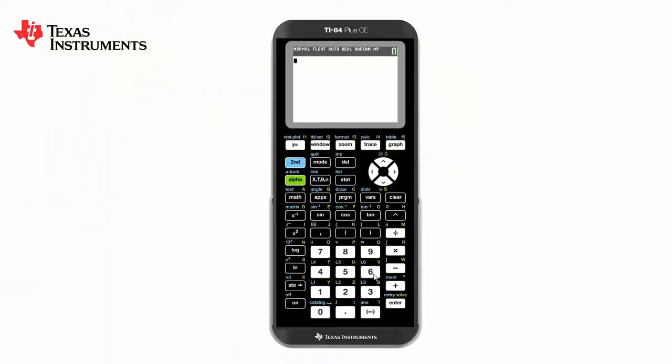We can do addition, for example 6 plus 3, and press the enter button rather than the equals button. Division we can either use the divide line or we can use fractions, which I'll show you later. And multiplication comes up with a star symbol just like on a computer.